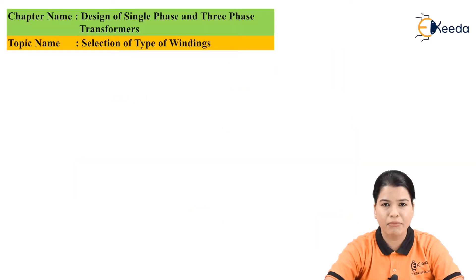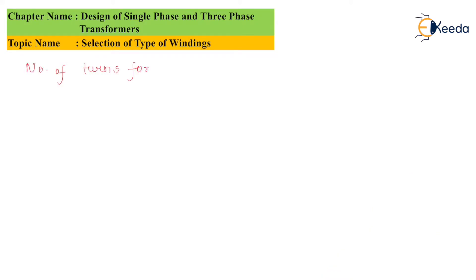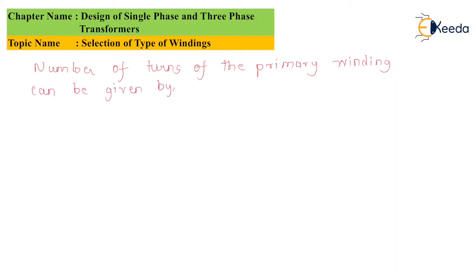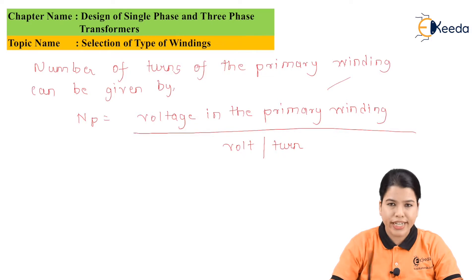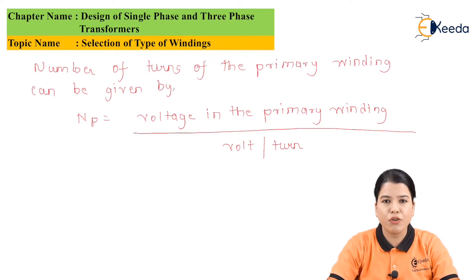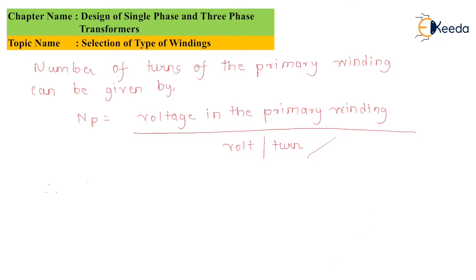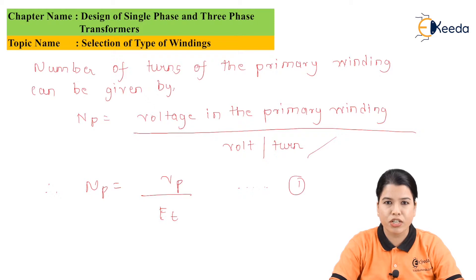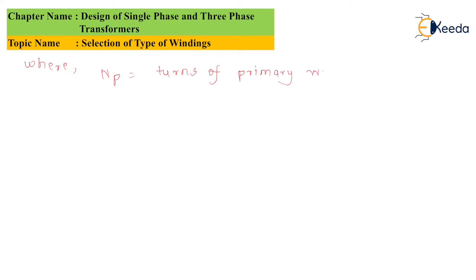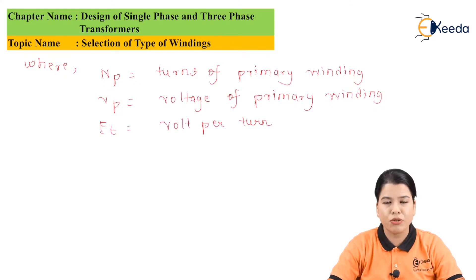The value for the number of turns of the primary side can be written as: NP is equal to voltage in the primary winding divided by volt per turn. Therefore, NP is equal to VP divided by ET — let this be equation number 1. Where NP is the turns in the primary winding, VP is the voltage of the primary winding, and ET is equal to volt per turn.